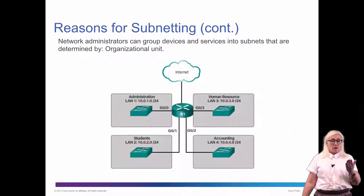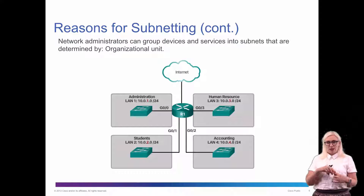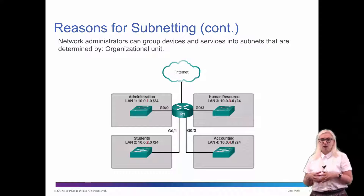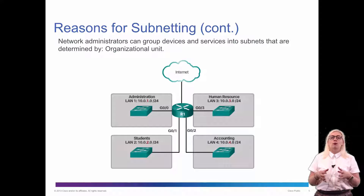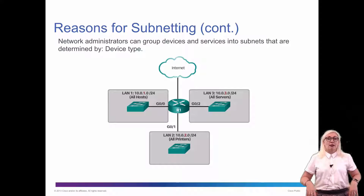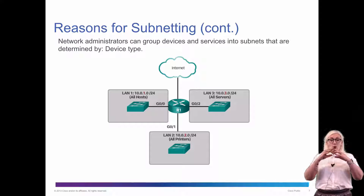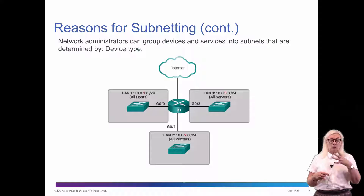We can also divide subnets by organizational unit. For instance, we can have one subnet for administration, another for the human resource department, one for the IT department, one for accounting, and one for students and faculty. That is another way to segment our network. We can also divide by device type — all printers in one subnet, servers in another, and all hosts and clients in a third subnet.